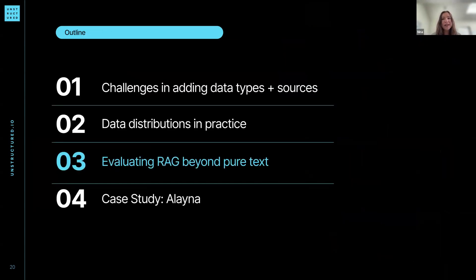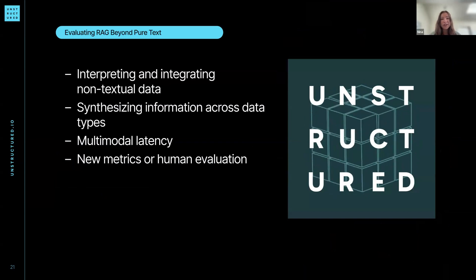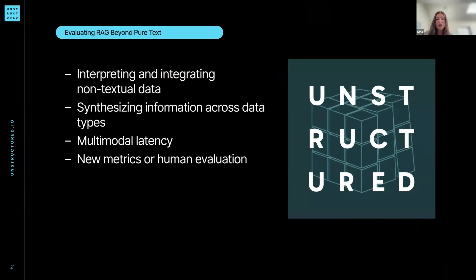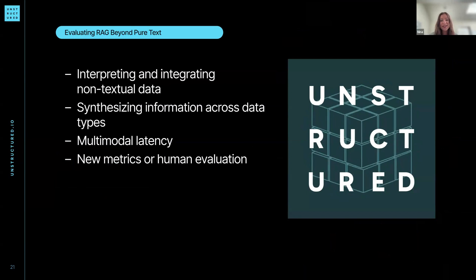We'll talk about some considerations for evaluation before diving into the case study. You'll want to think about interpreting and integrating non-textual data — like how you want it to show up. Is it that when you're discussing something where there's a relevant image or table, that's when you want it to be pulled seamlessly? In your evaluation, you'll have to think about defining information across data types — across text and images.